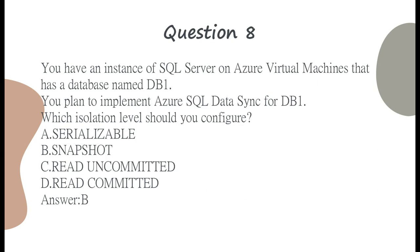Question 8. You have an instance of SQL Server on Azure Virtual Machines that has a database named DB1. You plan to implement Azure SQL Data Sync for DB1. Which isolation level should you configure? A. Serializable. B. Snapshot. C. Read uncommitted. D. Read committed. Answer: B.